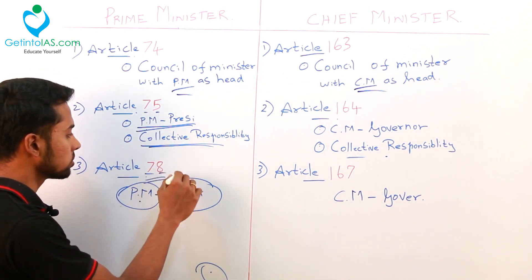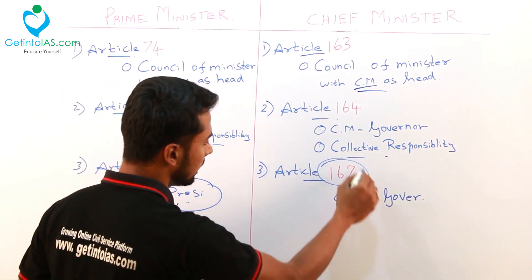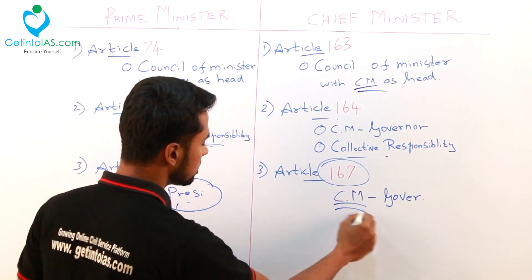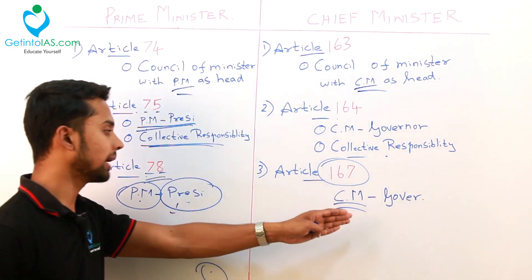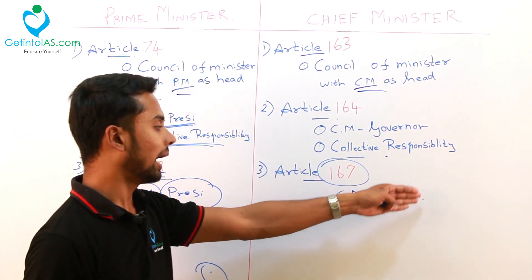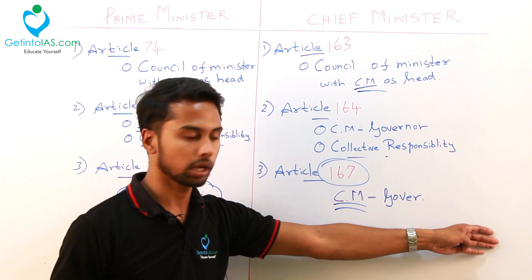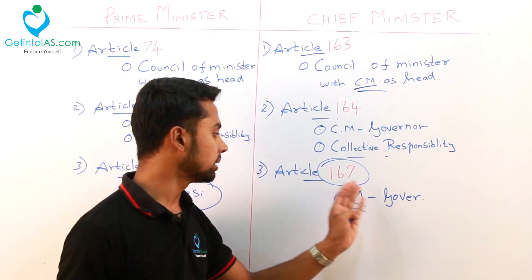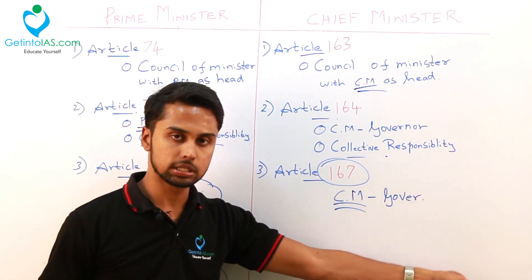Article 78 for the union corresponds to article 167 for the state — you minus 1 and add 1 to get 167. Here also your chief minister will act as a bridge between the governor and the council of ministers.